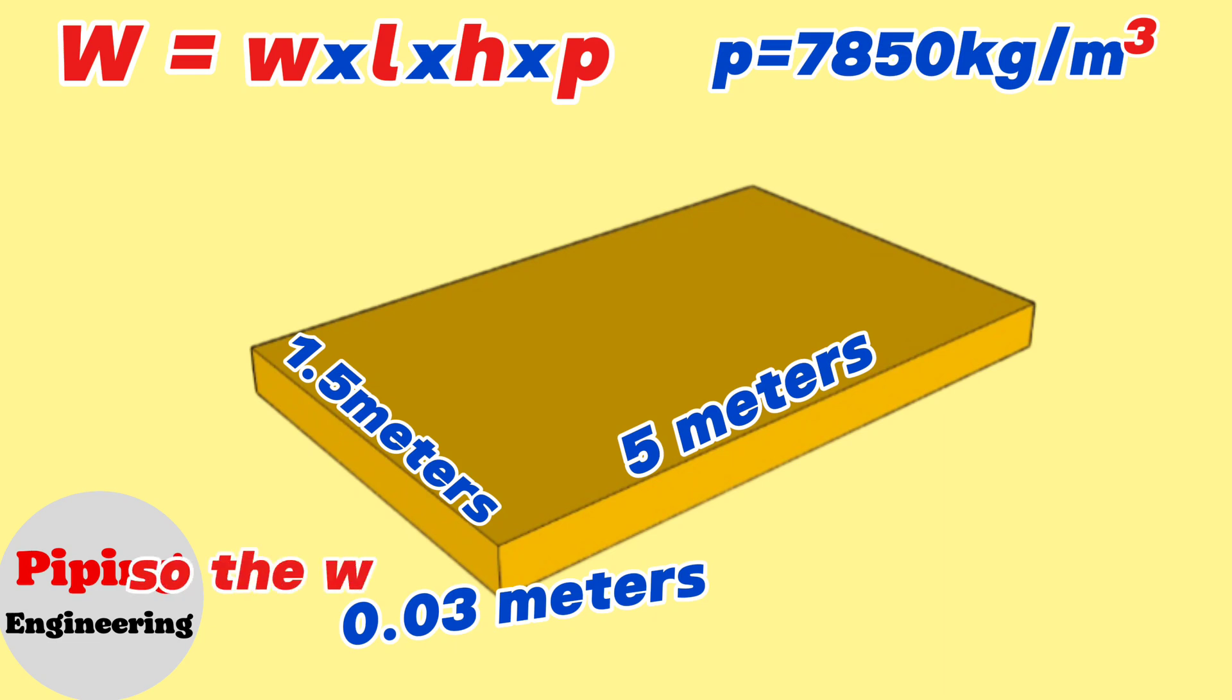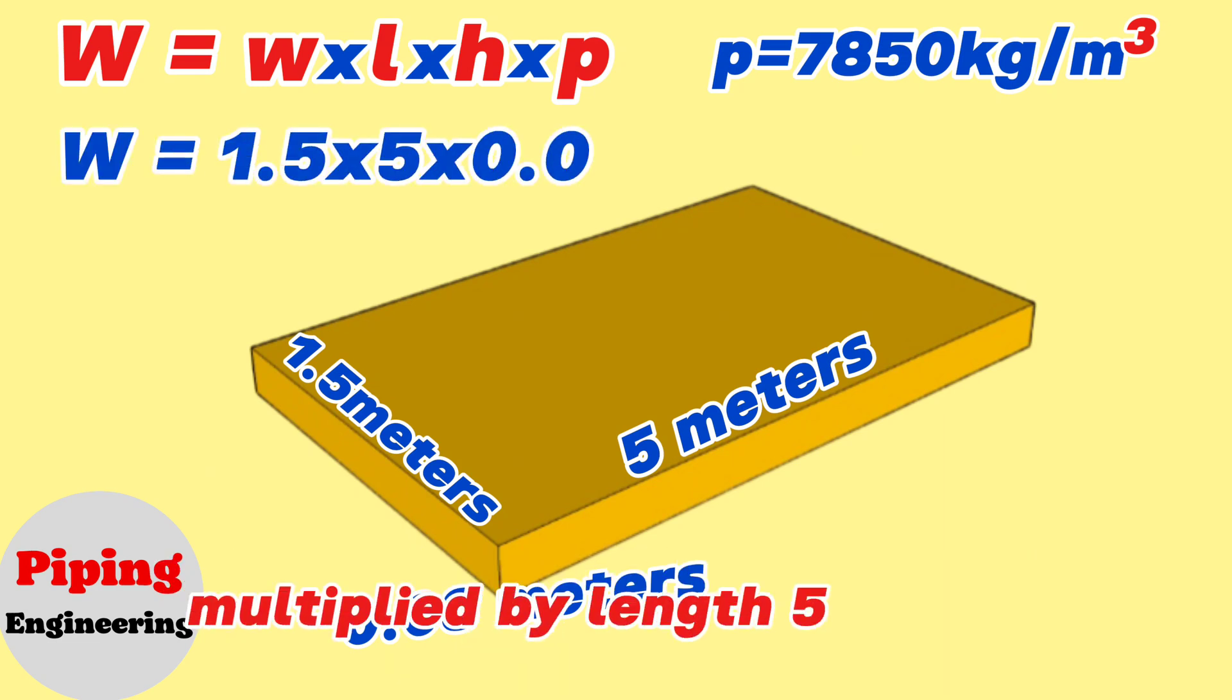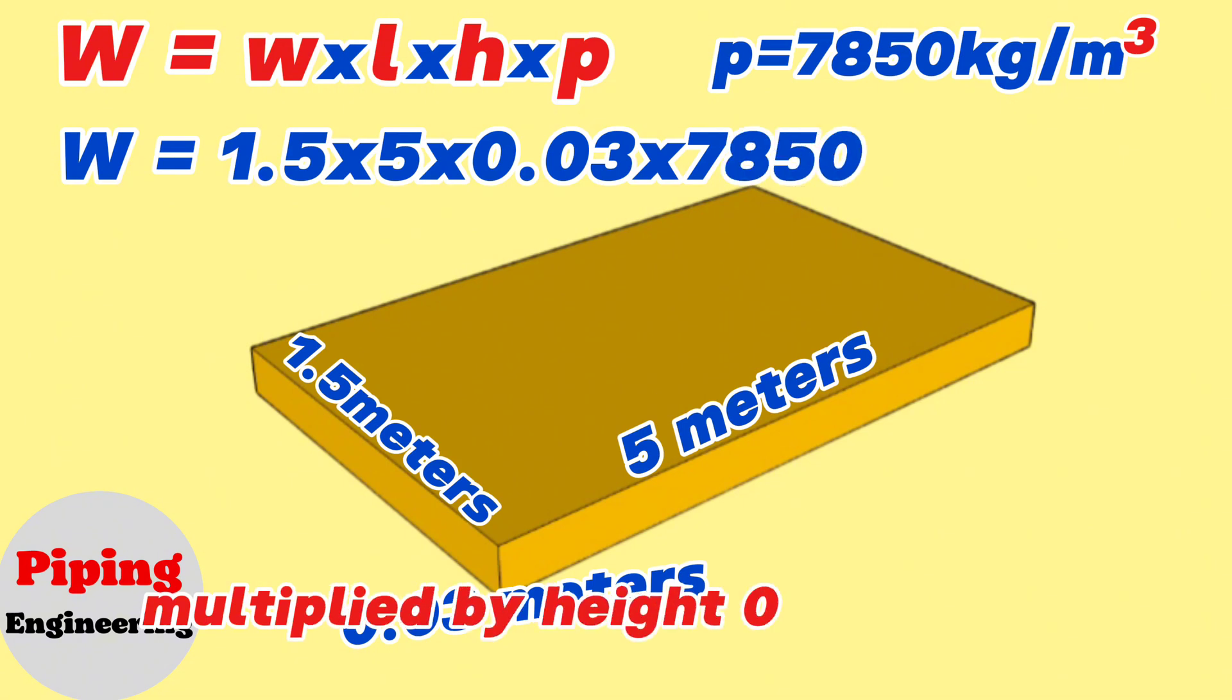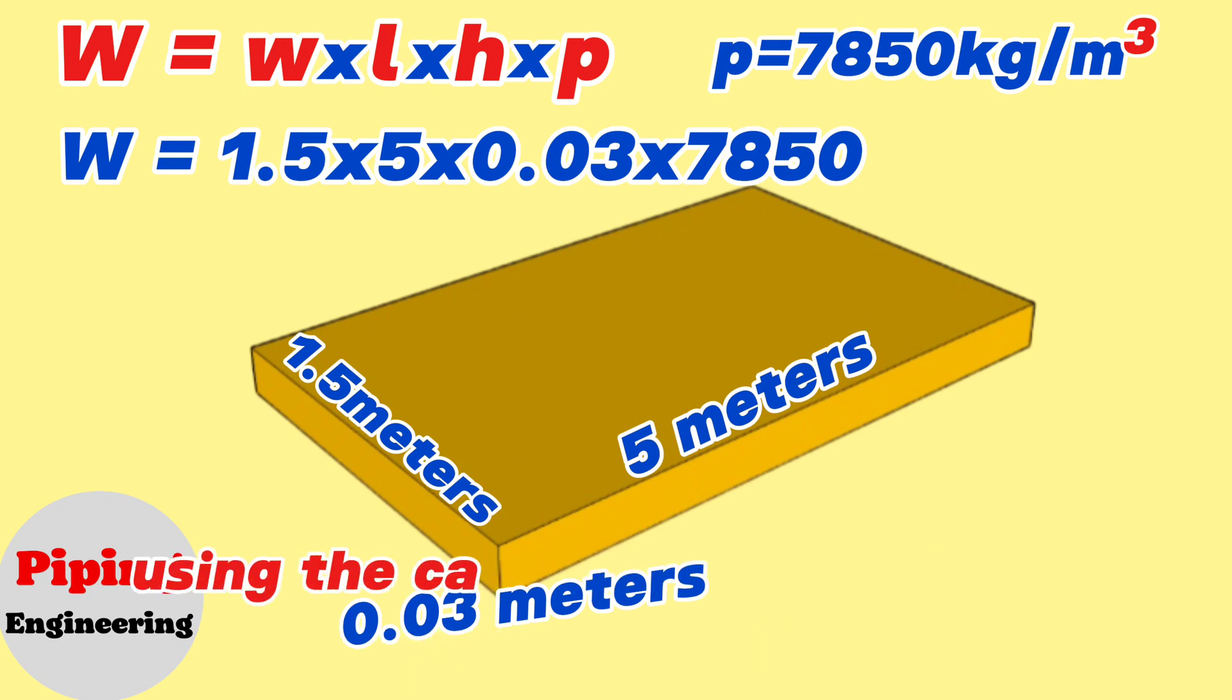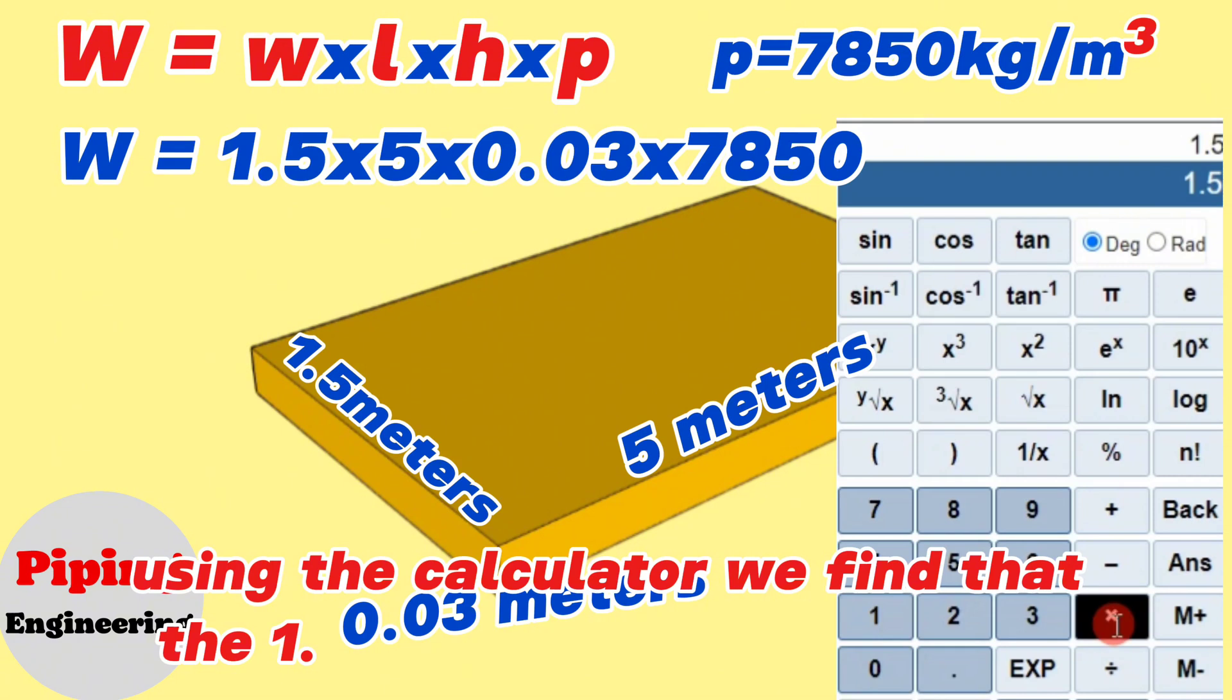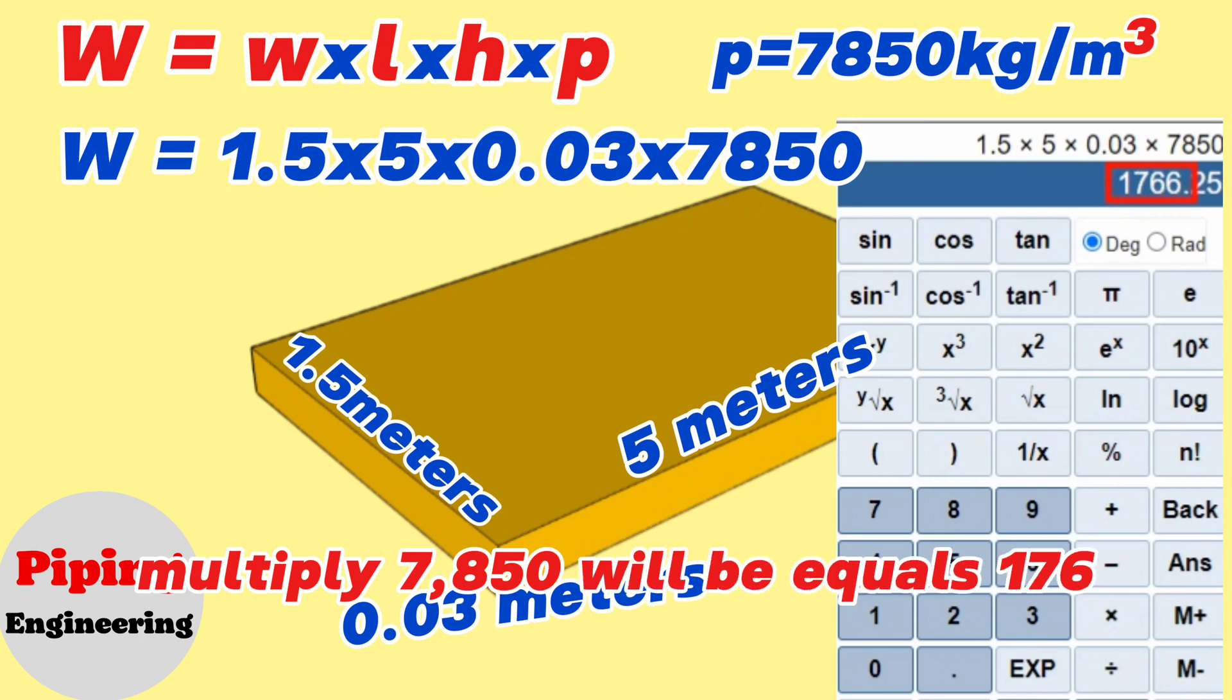So the weight will be equals width 1.5 meters multiplied by length 5 meters, multiplied by height 0.03 meters, and multiplied by iron density 7850 kg per cubic meter. Using the calculator, we find that 1.5 multiply 5 multiply 0.03 multiply 7850 will be equals 1766.